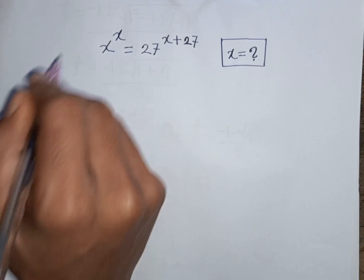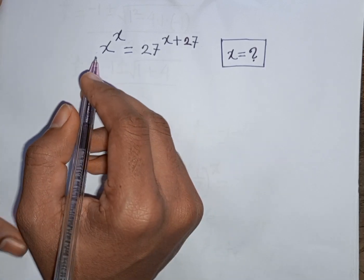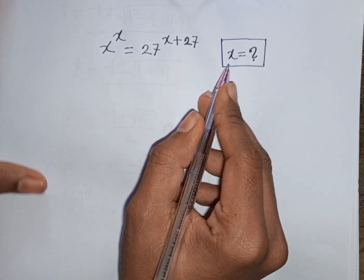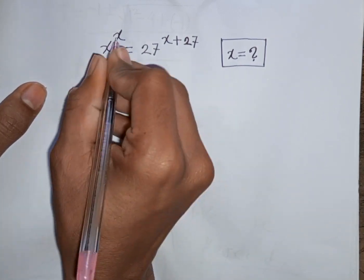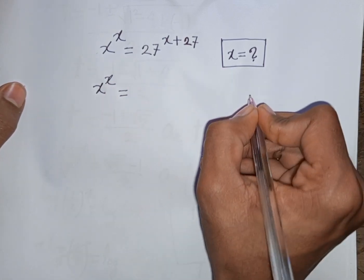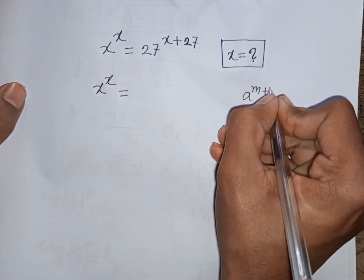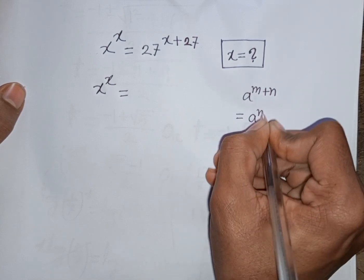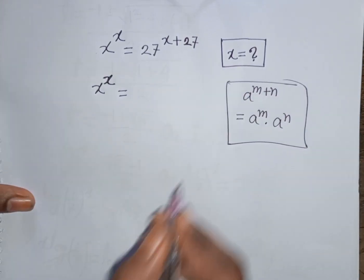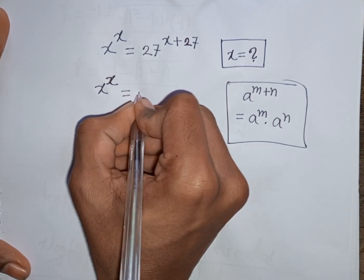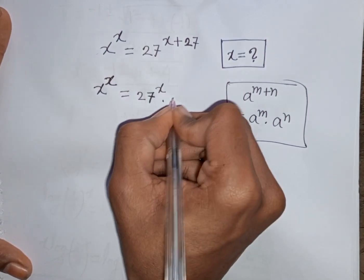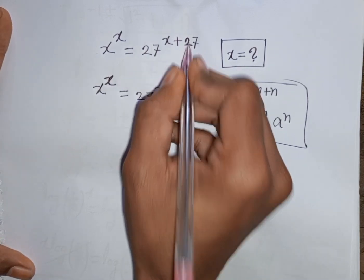Next I will solve this exponential equation: x power x is equal to 27 power of x plus 27. Find the value of x. We can apply the exponential rule that a power of m plus n is equal to a power m times a power n. So the right side becomes 27 power of x times 27 power of 27.